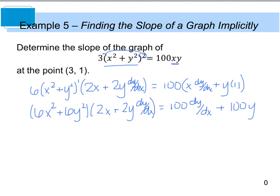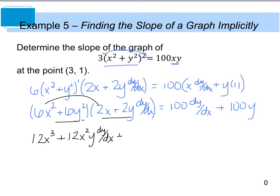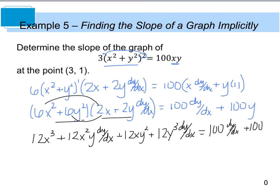When I simplify this, I distribute that 6 onto x squared plus 6y squared and multiply that by 2x plus 2y dy/dx, and that's going to equal 100 dy/dx plus 100y. My goal is to get my dy/dx terms on one side and everything else on the other, so I'm going to distribute or FOIL these two terms. When I do that, I end up with 12x cubed plus 12x squared y dy/dx plus 12xy squared plus 12y cubed dy/dx, and this equals 100 dy/dx plus 100y.